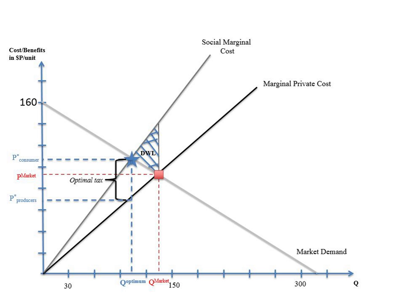High positive social costs, in the form of marginal damages, lead to an overproduction. In the diagram, there is overproduction at Q market versus Q optimum with an associated deadweight loss of the shaded triangle.